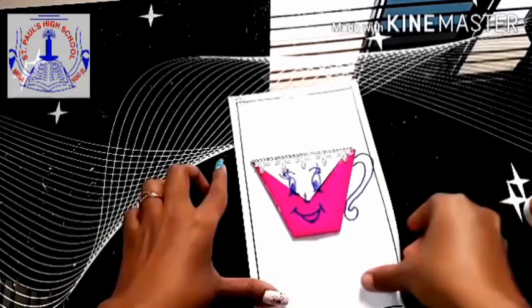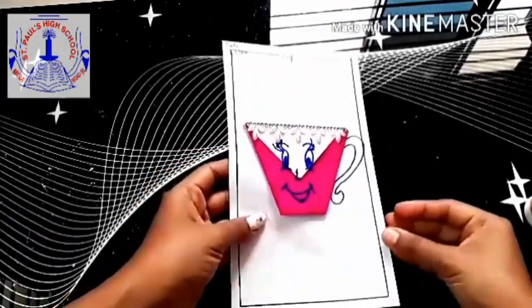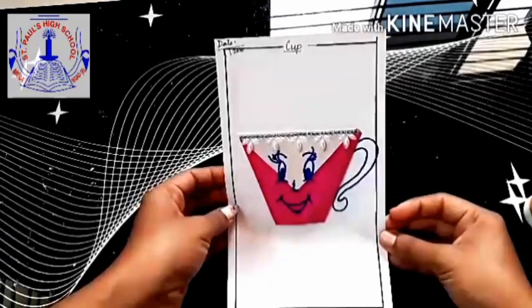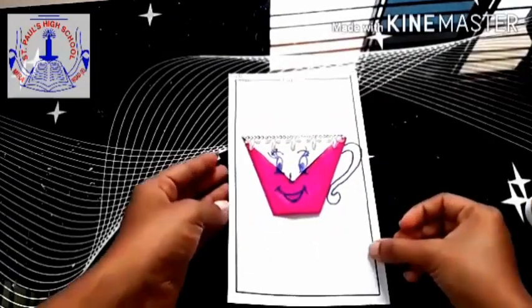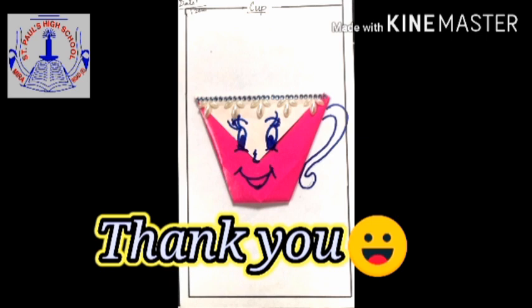So that's it. We are done with the cup. You all can use your own ideas and make it creative. I hope you all have understood how to make a cup. It was simple and easy. This is how your cup will look. So you all have to stick it properly and neatly, and as well as you are going to draw the background and colour it. Stay home. Stay safe. Thank you.